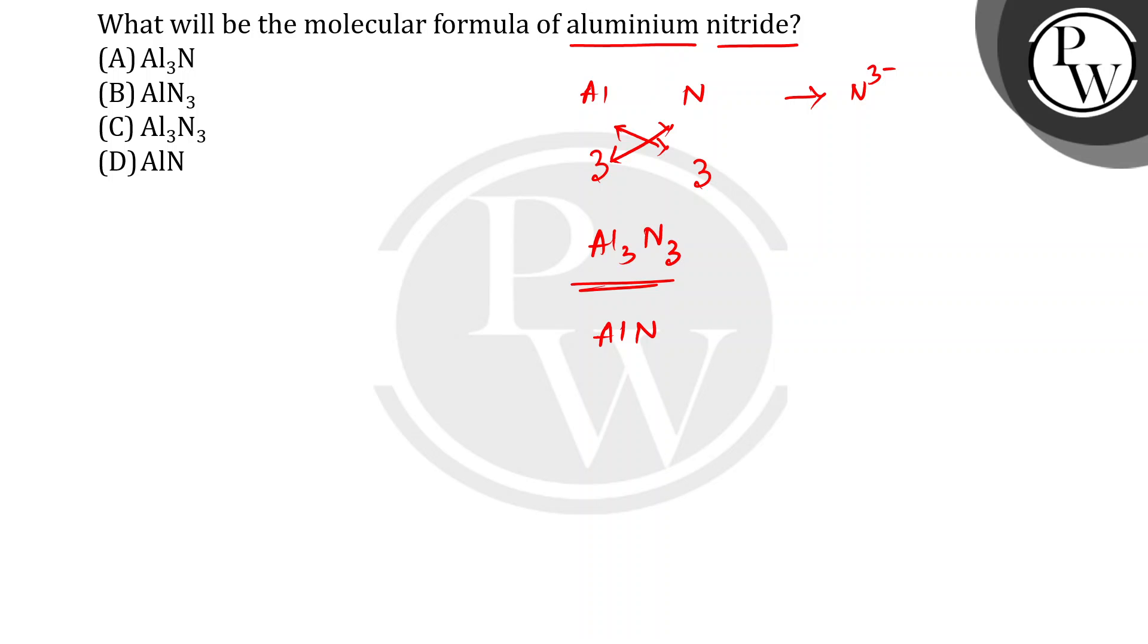ki agar aap ek molecule of aluminium nitride ko lete ho, to ek molecule of aluminium nitride me, ek aluminium aur ek nitrogen hi rahe ga. Aisa nahi hai, ki 3 atom of aluminium and 3 atom of nitrogen mil ke ek molecule of aluminium nitride ho raha hai. To isliye ye galat hai.